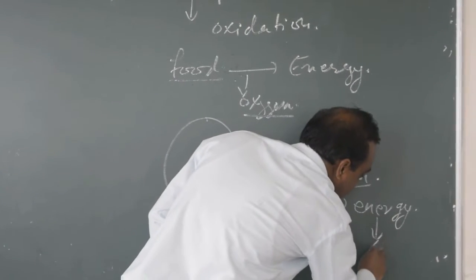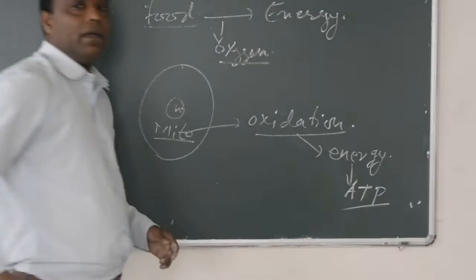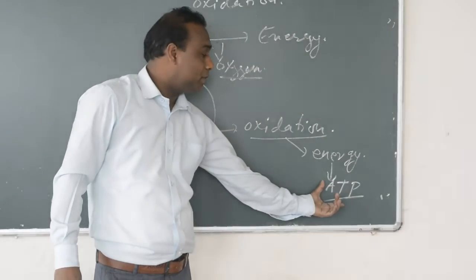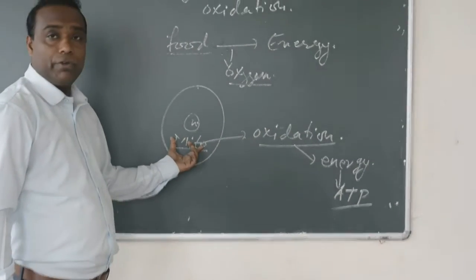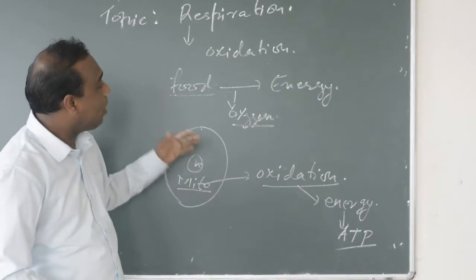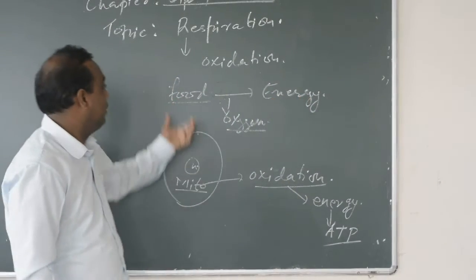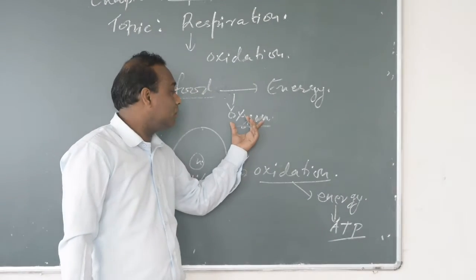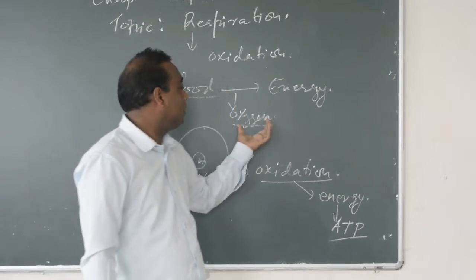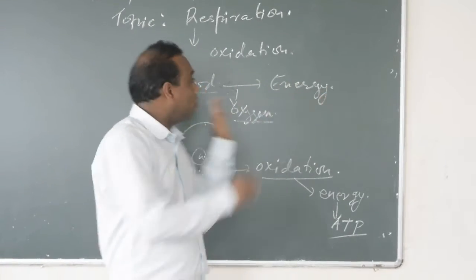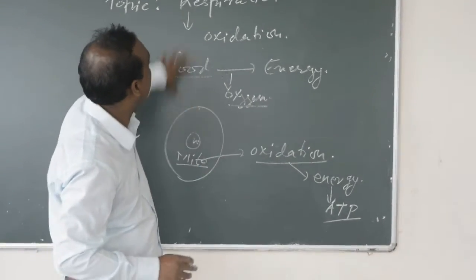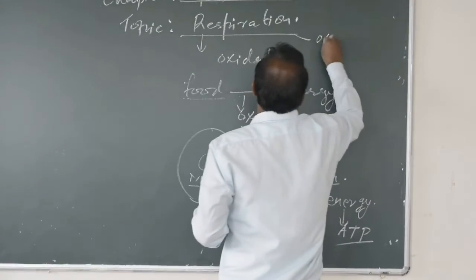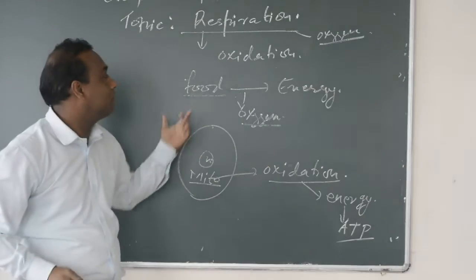The energy produced is in the form of ATP — adenosine triphosphate. This is the form of energy produced in the mitochondria. For the production of energy, after the digestion of the food, oxygen is utilized. That oxygen converts the food into energy. This whole process is known as respiration, and during respiration, oxygen is needed.